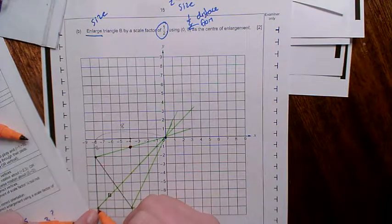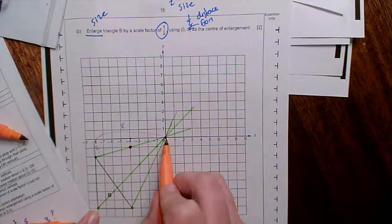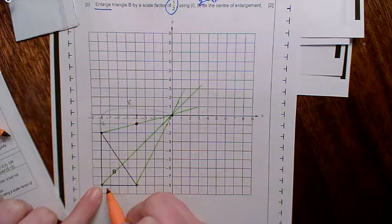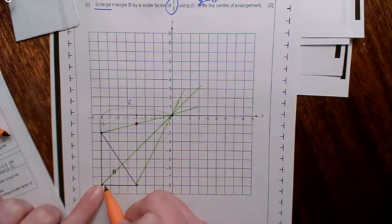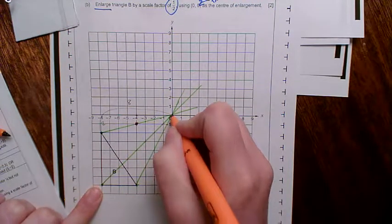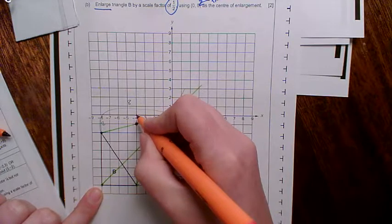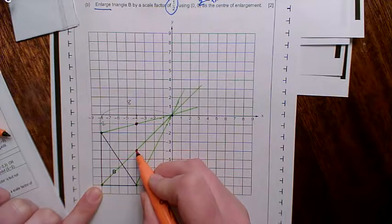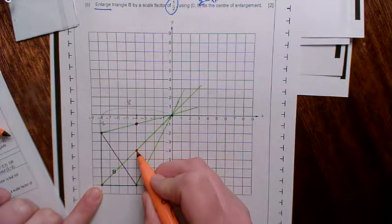Now, I need to look at this point. On the original, it went across 8, and it went down 8. So, for the new point, I need to go across half of that, so across to 4, and down 4. And I'm thrilled to see that it's fallen on top of my guidelines. That means it's probably correct.